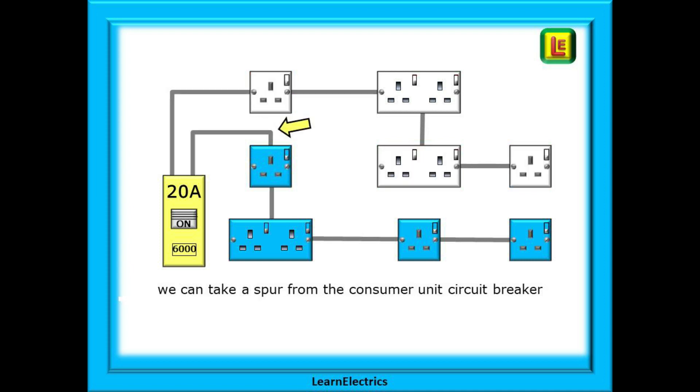We could if we wished take a second radial circuit directly from the circuit breaker and again there would be no limitations on the number of sockets or the order in which they are connected. The only requirement would be that for the 20 amp type B breaker shown all cables should be 2.5 millimeters and the maximum measured ZS should not exceed 1.75 ohms at any point.